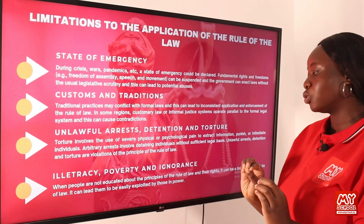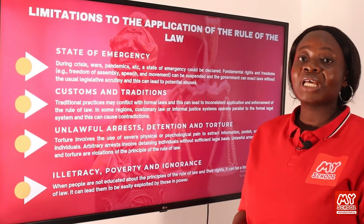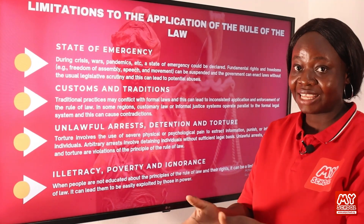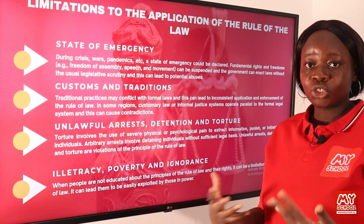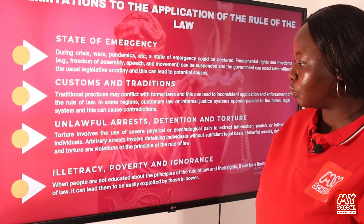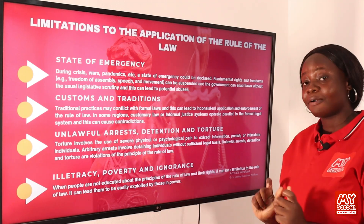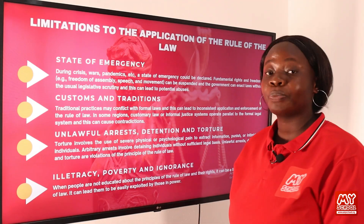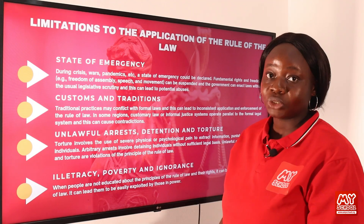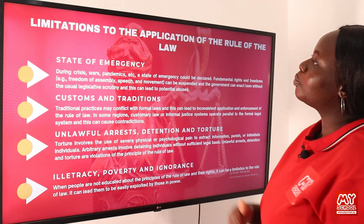Unlawful arrests, detentions, and torture are also limitations. Torture involves the use of severe physical or psychological pain to extract information, punish, or intimidate individuals. Arbitrary arrest involves detaining individuals without sufficient legal basis. These are all violations of the principles of the rule of law, as people are not offered lawyers or legal representatives to defend their interests. Finally, literacy, poverty, and ignorance are limitations: when people are not educated about the rule of law and their rights, they can be easily exploited by those in power.